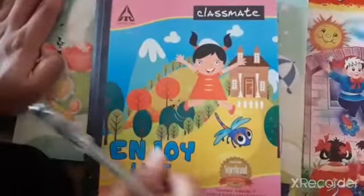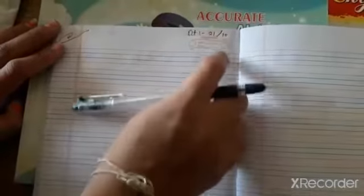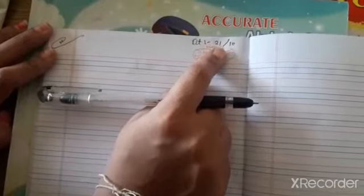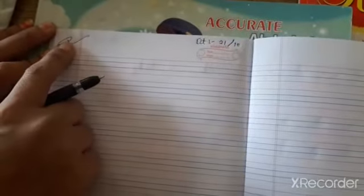So first of all, keep this book and open this page. Then you have to write the date, 21st October, and here you have to write HW.